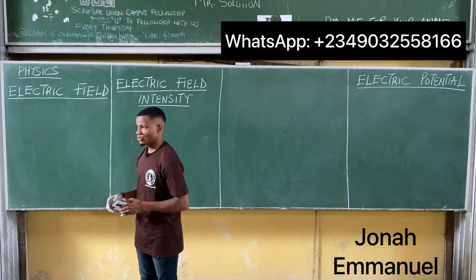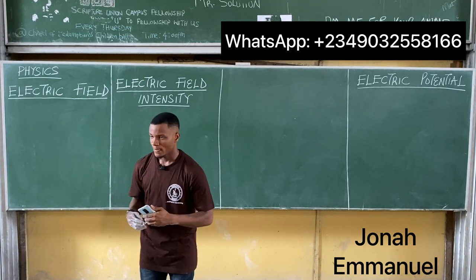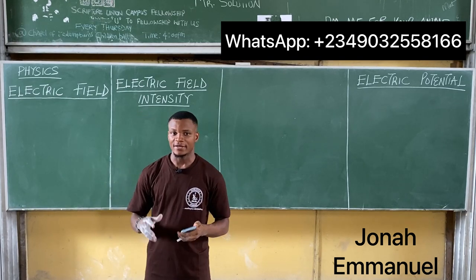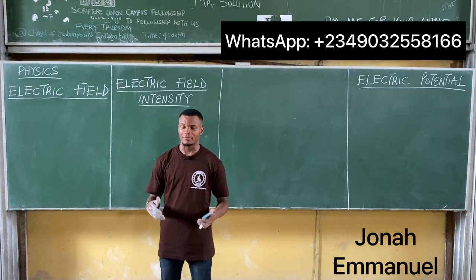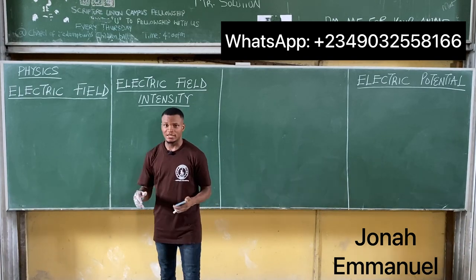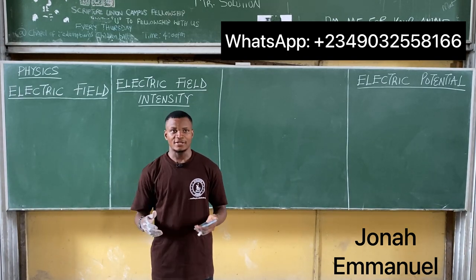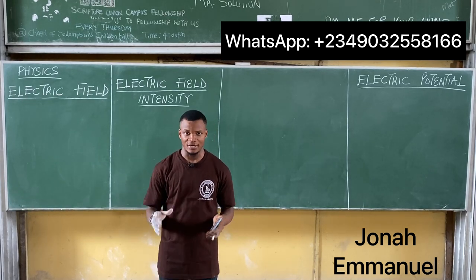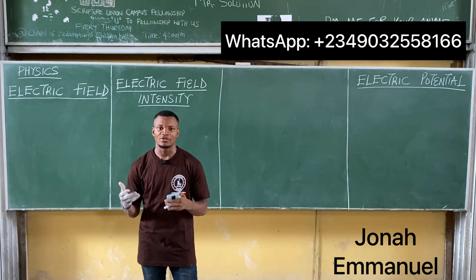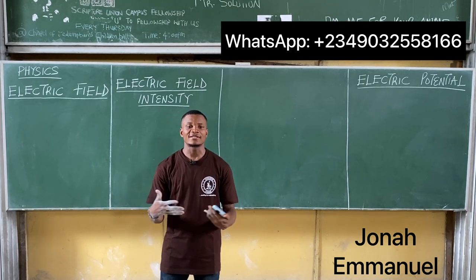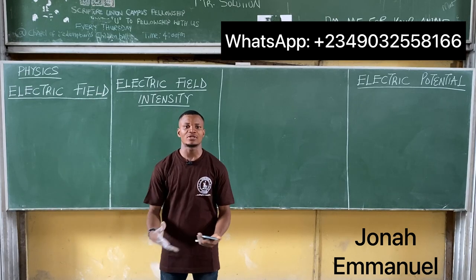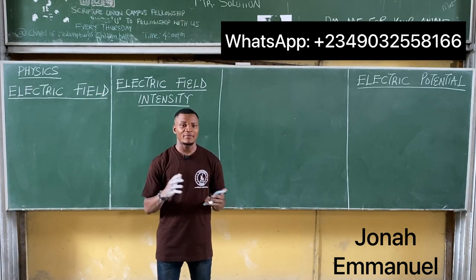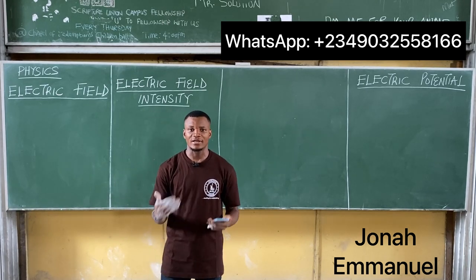Now in order to draw a diagram for electric field, we test or experiment on an electric field by using what is called a test charge, which I defined earlier. Now this is what we call electric lines of force. For instance, if I have a positive charge and a negative charge being brought together, from the first law of electrostatics that would be an attraction. This attraction causes an electric field to be built around them, and this electric field can be represented diagrammatically using what is called electric lines of force.